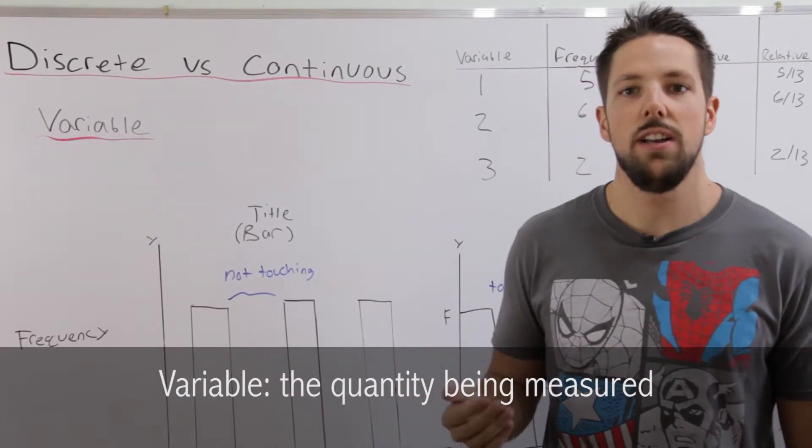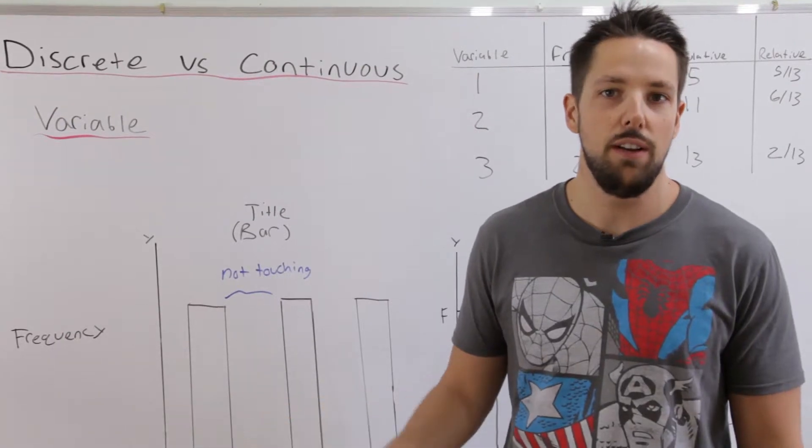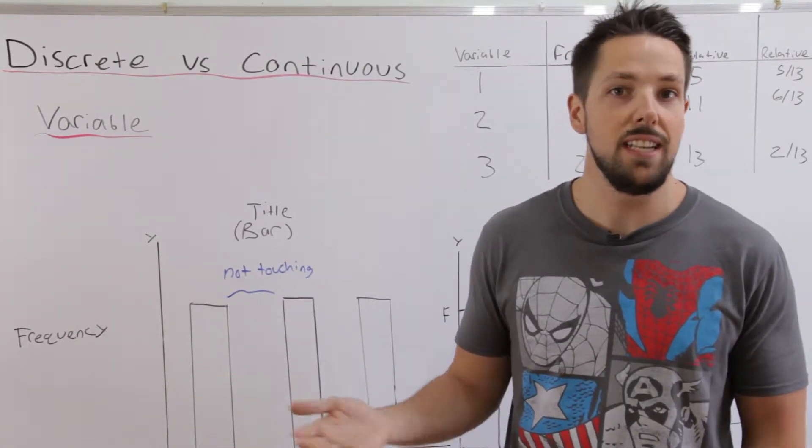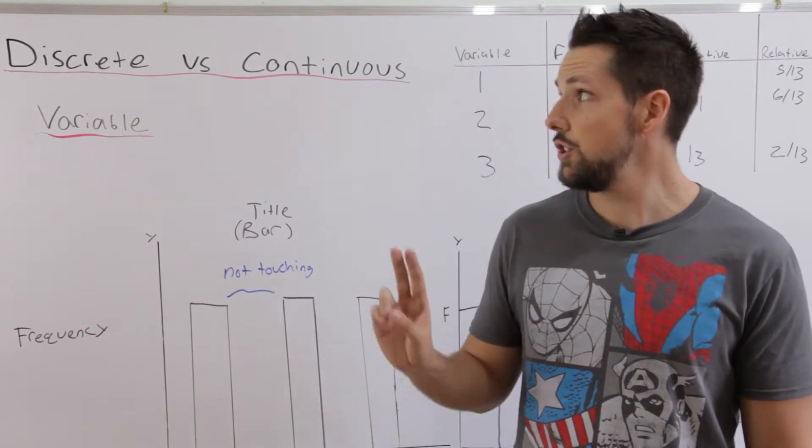If we're doing a study on intelligence, the variable's going to be IQ. If we're doing a study on shoe size, the variable's going to be the size of someone's shoe.